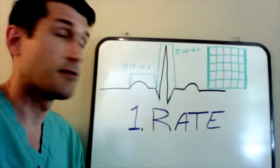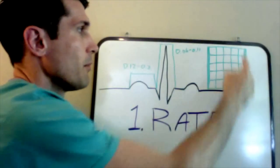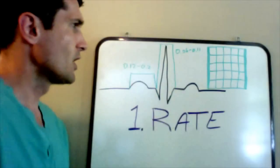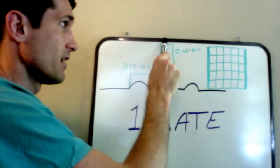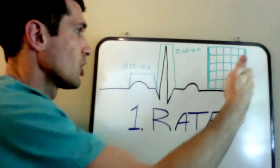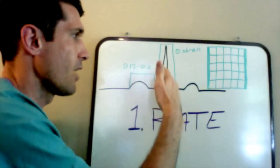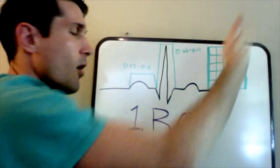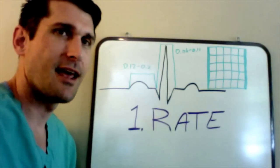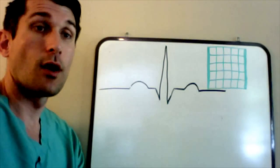If there are five R waves on a six-second strip, we multiply by 10 to get 50 beats per minute. Another method is to count the number of large boxes between each R wave and divide that number into 300. For example, if you count five large boxes between R waves, 300 divided by 5 gives a rate of 60 beats per minute. That's step one — calculating the rate.